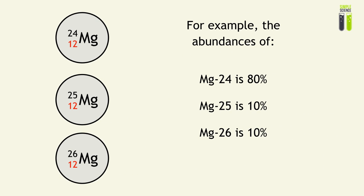And they will have different abundances. For example, magnesium-24 has a relative abundance of 80%, magnesium-25 as 10%, magnesium-26 as 10%. They all add up to 100%.